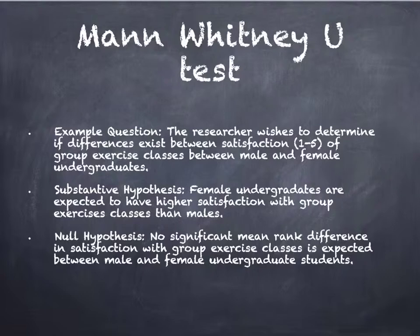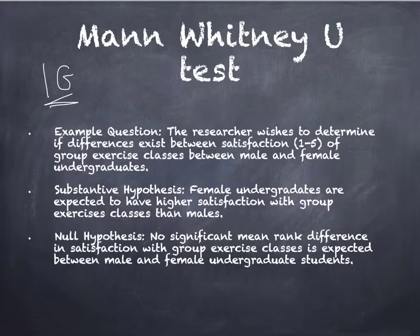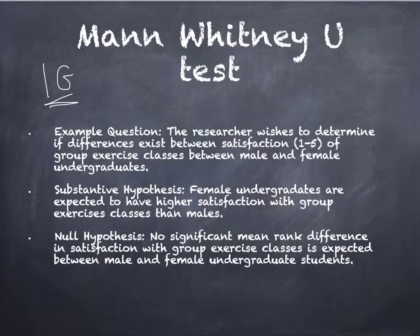Moving into the non-parametric t-tests — this is the non-parametric independent groups version, the Mann-Whitney U. The example research question: the researcher wishes to determine if differences exist in satisfaction, measured on a 1-5 scale, with group exercise classes between male and female undergraduates. This is an independent observation — you can't be both male and female. The null hypothesis references mean rank difference, not mean difference, because the Mann-Whitney U tests ranks rather than means.